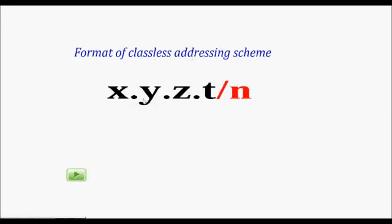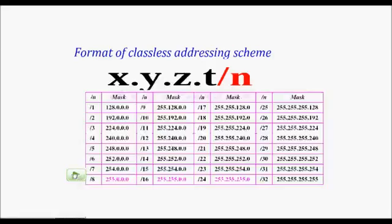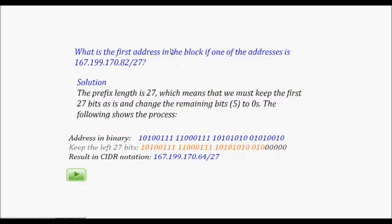The format for classless addressing (CIDR notation) is: x.y.z.t/n, where n is the prefix length indicating how many bits belong to the network part. To find the network address, you AND the IP address with the network mask, which has n ones followed by zeros. For example, /8 means the mask is 255.0.0.0; /16 means the mask is 255.255.0.0.